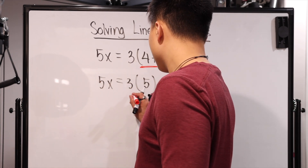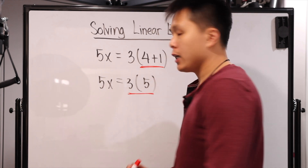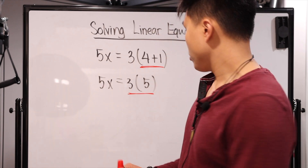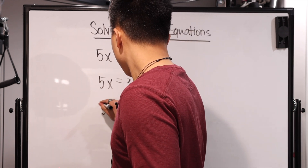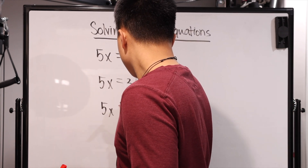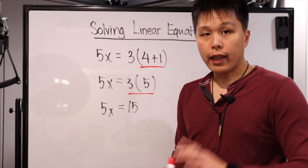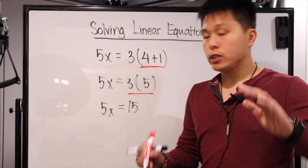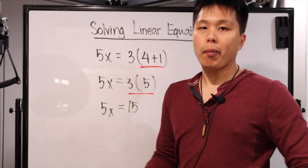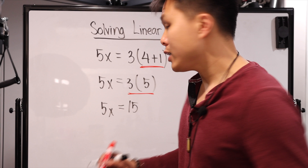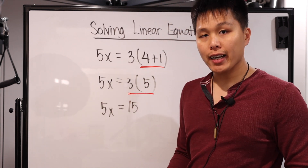We're still going to simplify even further. Now we just do the multiplication based on PEMDAS, so we have 5x equals 15. That was our first step — there were multiple things we did, but that was step one: simplify both sides.